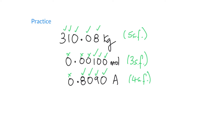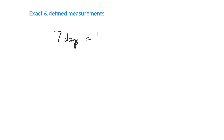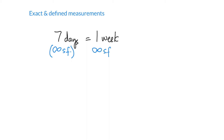Pat yourself on the back if you got all three correct. A couple of other cases: if you have an exact or defined number, things are different. For example, there are exactly seven days in one week — you might think that's one significant figure, but it is completely and precisely known. It is not somewhere between six and eight days, so we use the infinity symbol to indicate it has an infinite number of significant figures. The same applies to the number one in 'one week.'